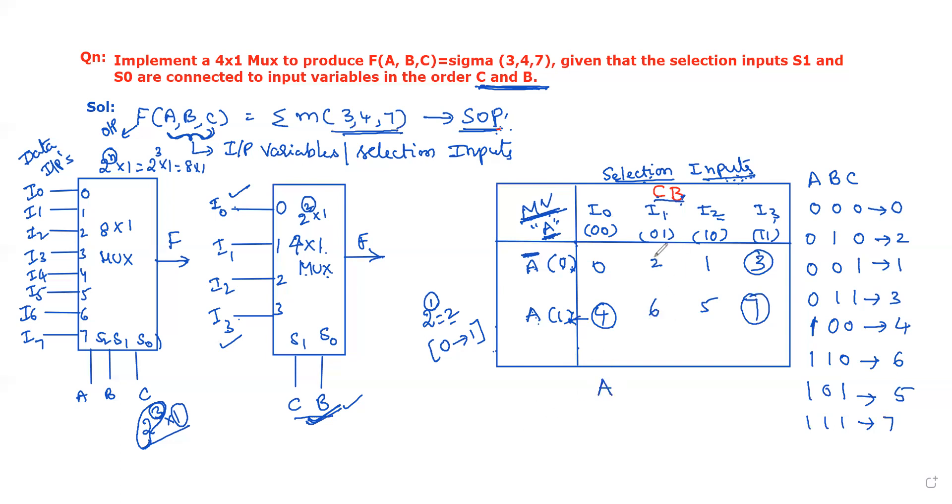Here no one is selected, so its value is 0. Here also no one is selected, so its value is 0. Here 3 and 7 both are selected, so its value is 1. This means A is the value of i0, this is value of i1, this is the value of i2, this is the value of i3.